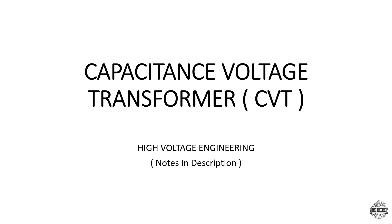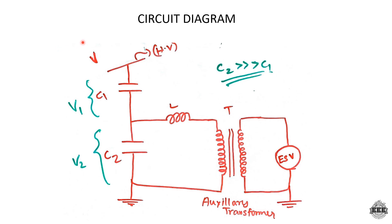Capacitance Voltage Transformers is an interesting case. The CVT circuit diagram has three major components. The first major component is the potential divider, consisting of C1 and C2. High voltage V1 and V2 are divided by this potential divider. The second part is the resonance circuit. The third component is the measuring device - an ESV, electrostatic voltmeter - connected to the output for voltage measurement.